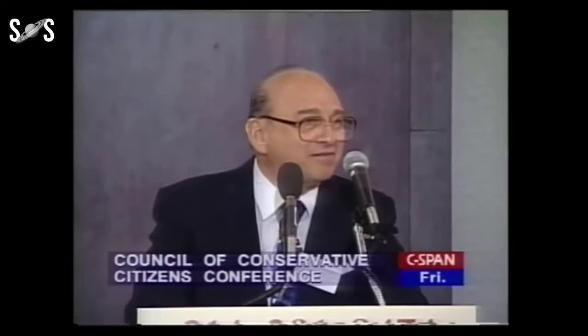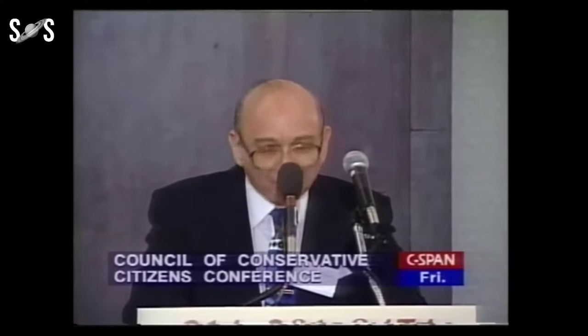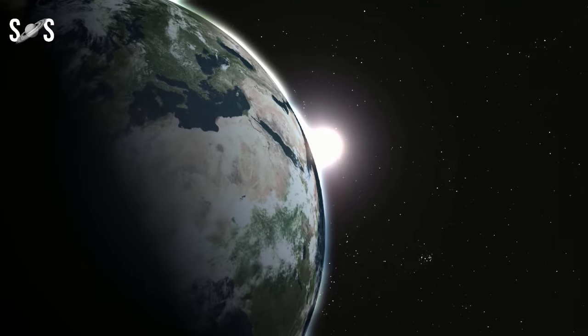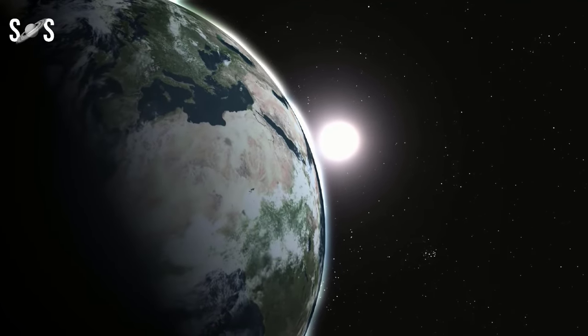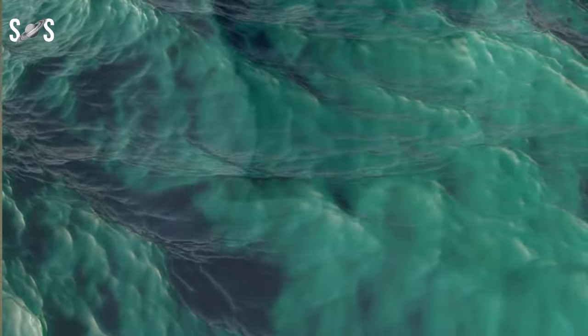Astrophysicist Michael Hart proved this. In 1978, he published a computer model where he found that if the Earth was 1% farther or 5% closer to the Sun, our oceans wouldn't be in liquid form.